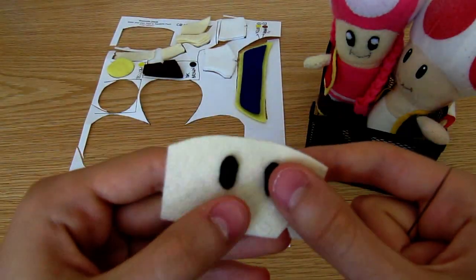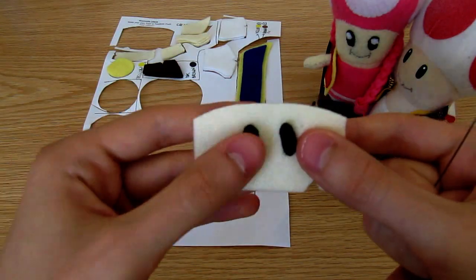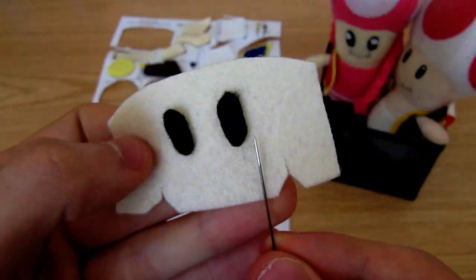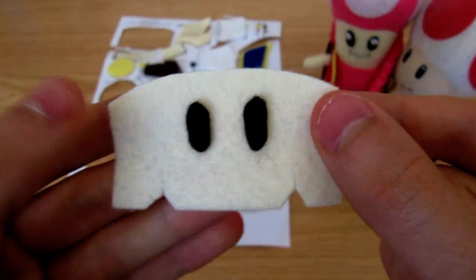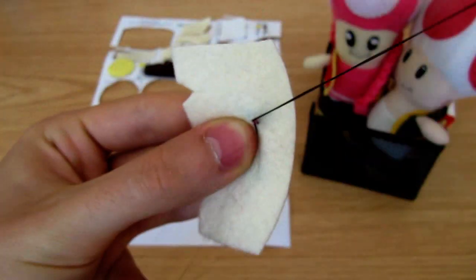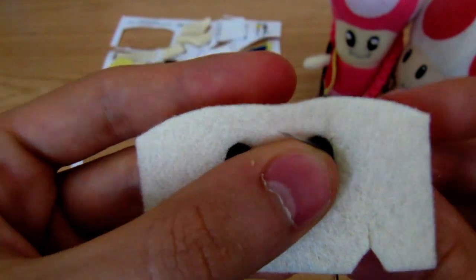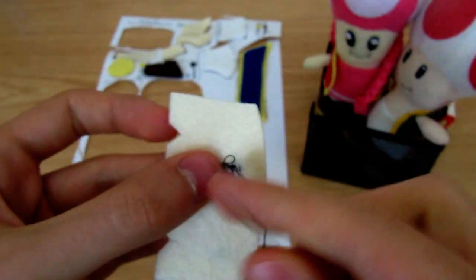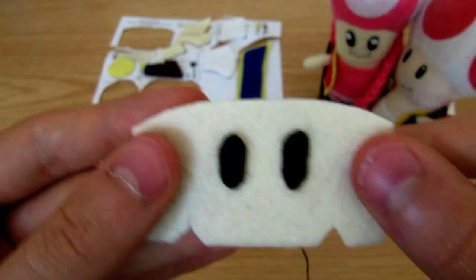Now we'll do the face. Position the eyes symmetrically on the face in this sort of position, and attach them with black thread in the same way you attach the spots. You don't need to finish in between eyes, just keep going.